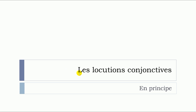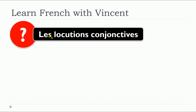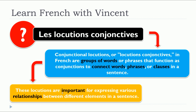In this lesson, we will see together les locutions conjonctives, but more precisely, we will see en principe. Let's first define what are les locutions conjonctives. Conjunctional locutions, or locutions conjonctives in French, are groups of words or phrases that function as conjunctions to connect words, phrases, or clauses in a sentence. These locutions are important for expressing various relationships between different elements in a sentence.